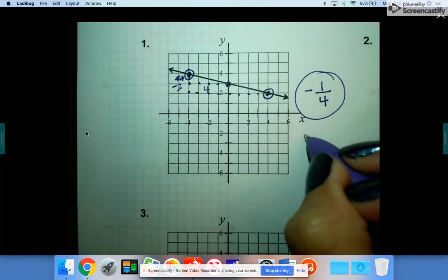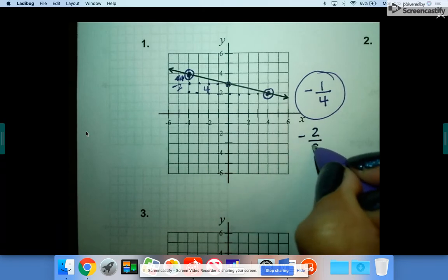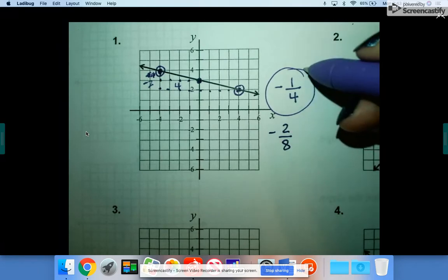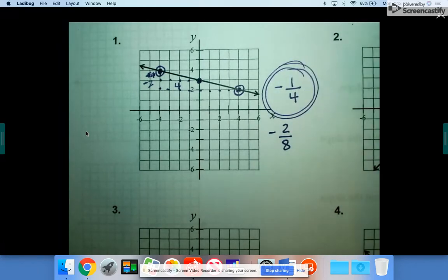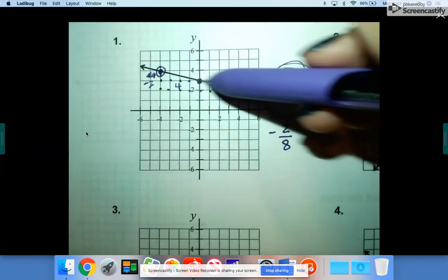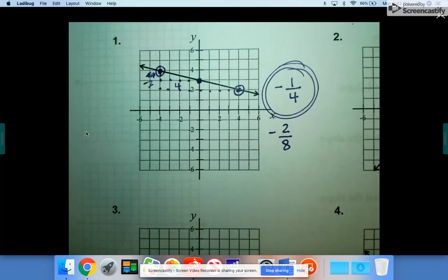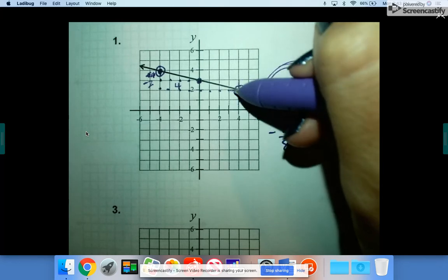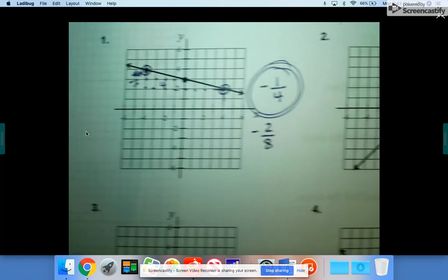But if you know that down two over eight simplifies, it actually simplifies to negative one-fourth. And then you know it's negative because it's going downhill. So actually, these would end up being the same thing no matter which points you pick, as long as you pick at an exact intersecting corner like that.